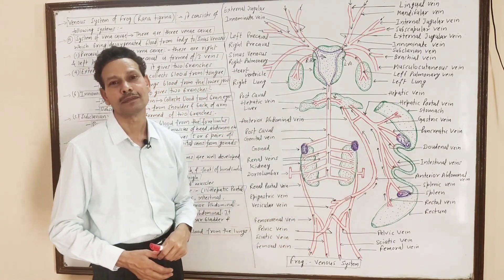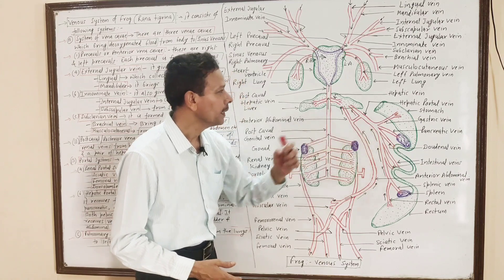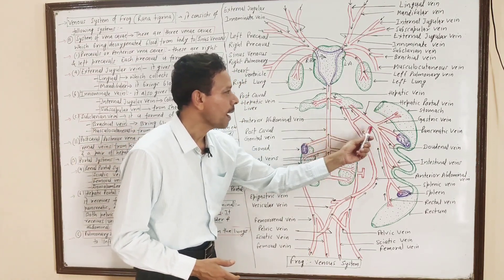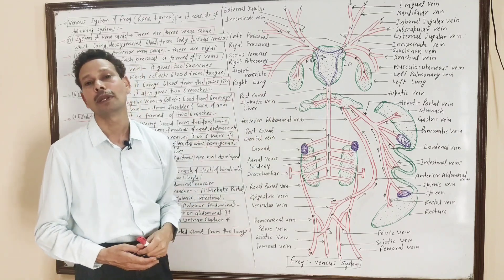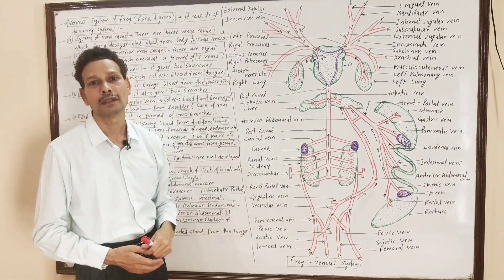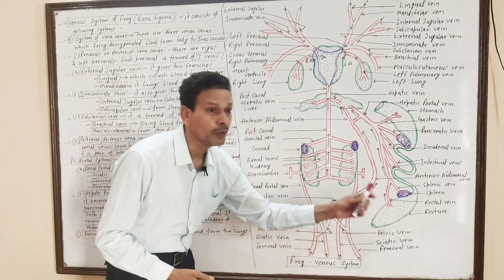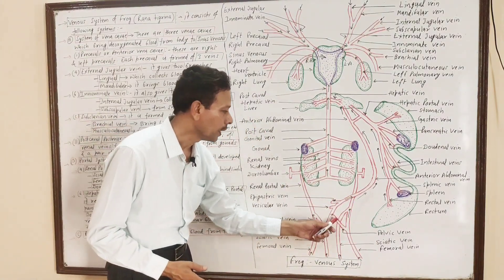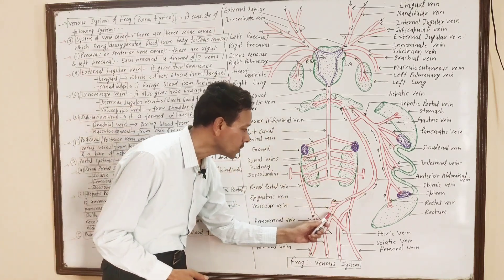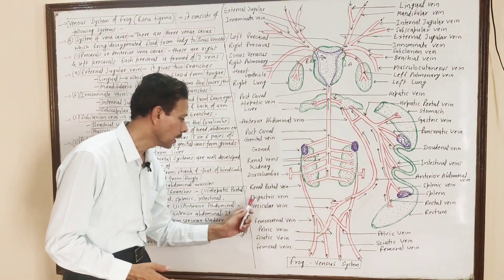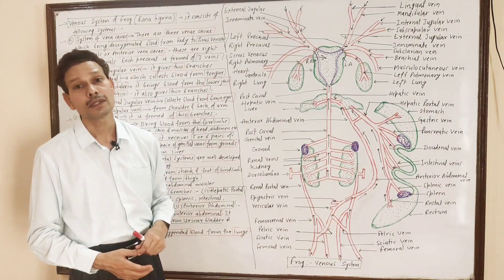In the hepatic portal system, there are two blood vessels: one is the hepatic portal vein and the second is the anterior abdominal vein. The anterior abdominal vein is formed by the union of right and left pelvic veins. These pelvic veins unite to produce the anterior abdominal vein. It also brings blood from the urinary bladder through the vesicular vein, and from the abdominal muscles of the body through the epigastric vein.